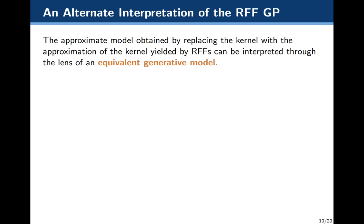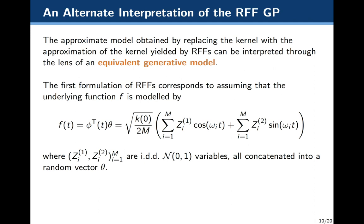We can interpret this RFF GP as a model in and of itself — a model where we're specifying the kernel to be that inner product. It is an approximation of our original kernel, but the dual way of interpreting it is that it's its own kernel, and we're specifying a new GP by it.